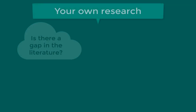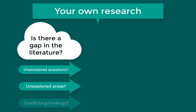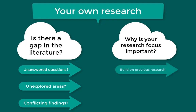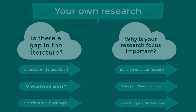For example, is there a gap in the literature where there are unanswered questions or unexplored areas? Are there conflicting findings in the existing literature? By showing what research has already been done, you can explain why it's important to research your specific topic. Your own research ideas could be building on previous research, trying a different approach than previous research, or exploring a different area than what has already been researched on that topic.